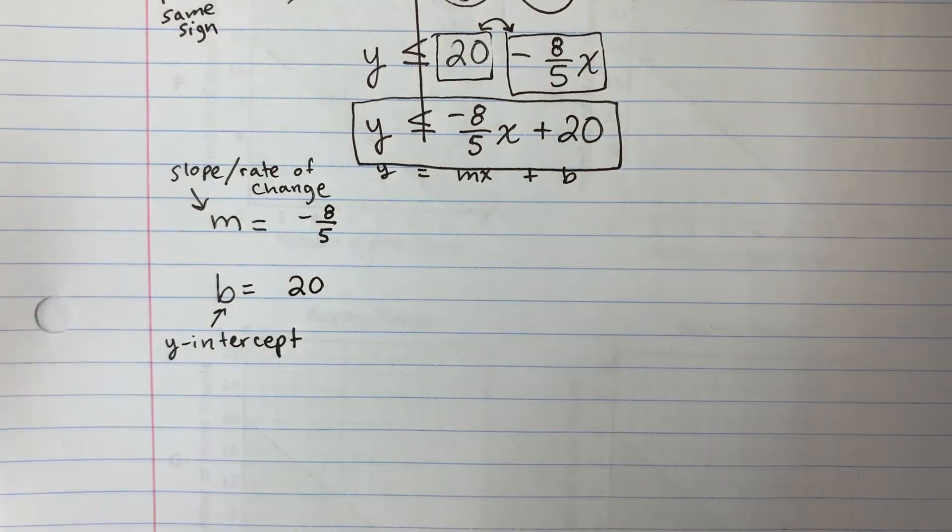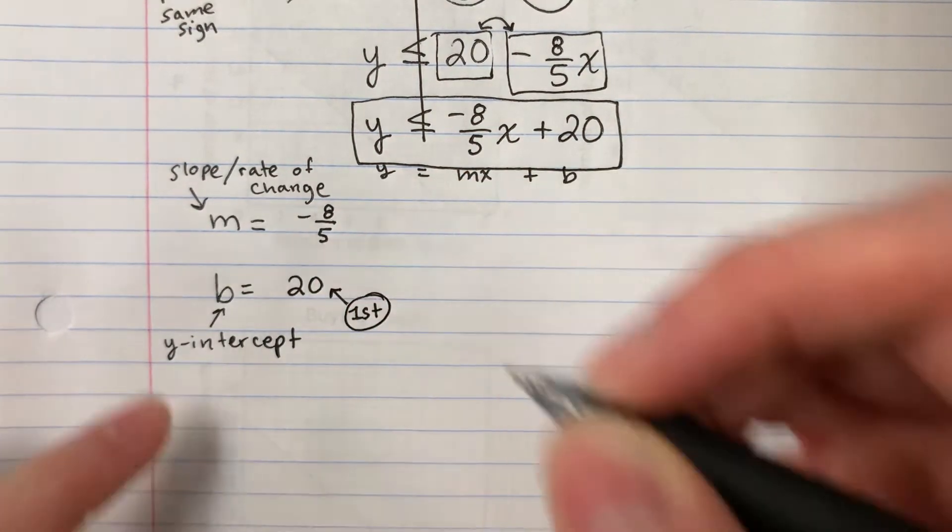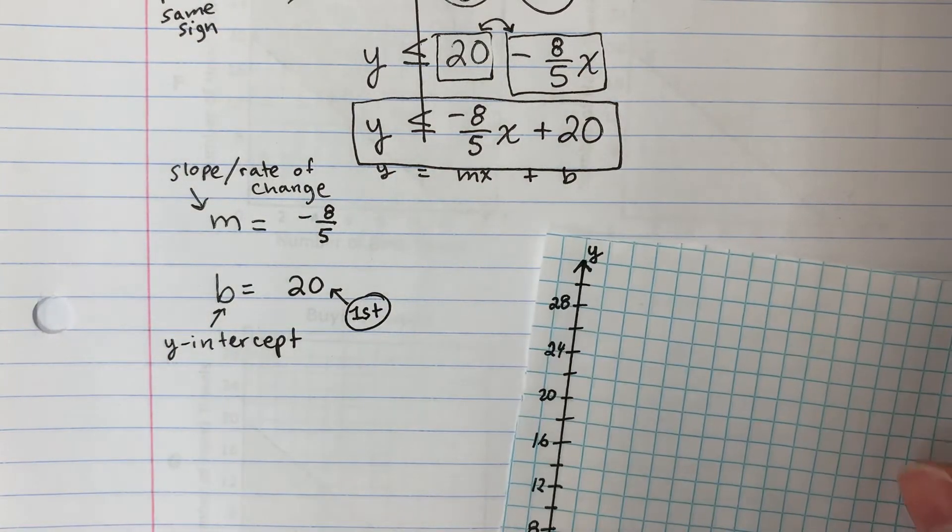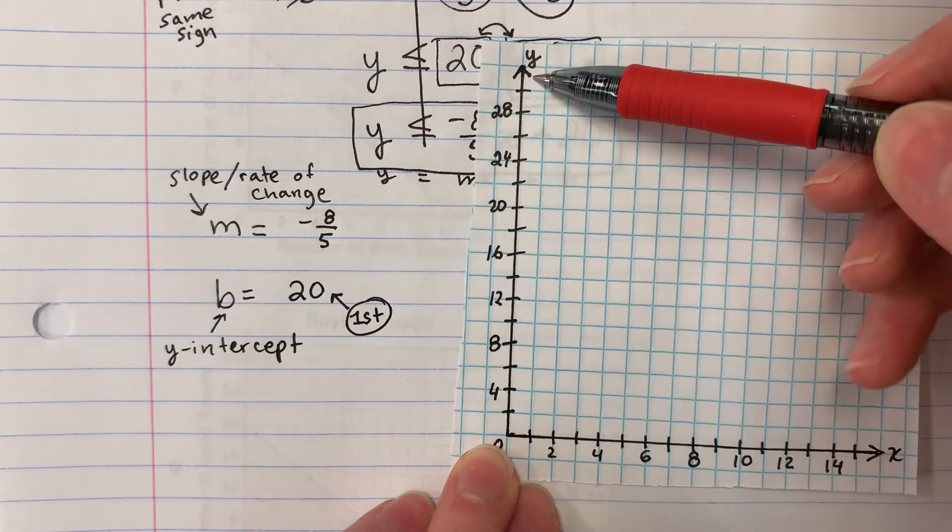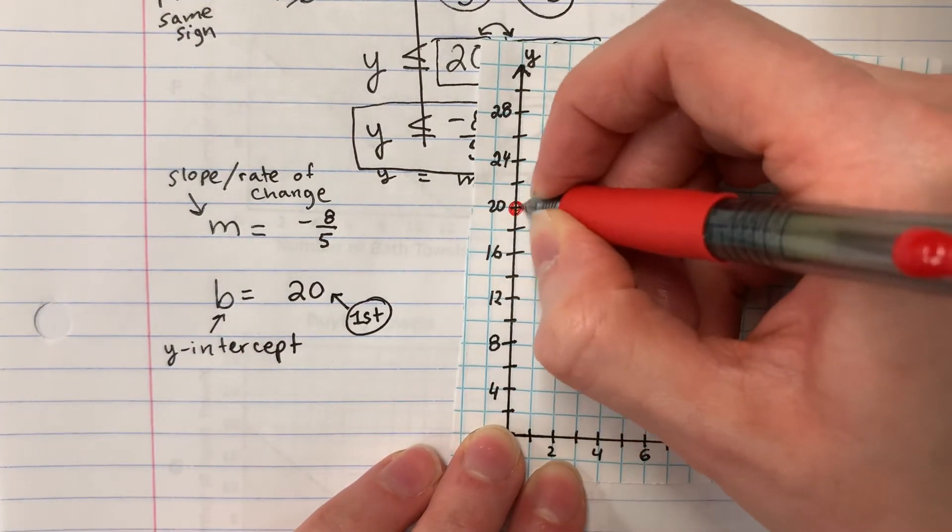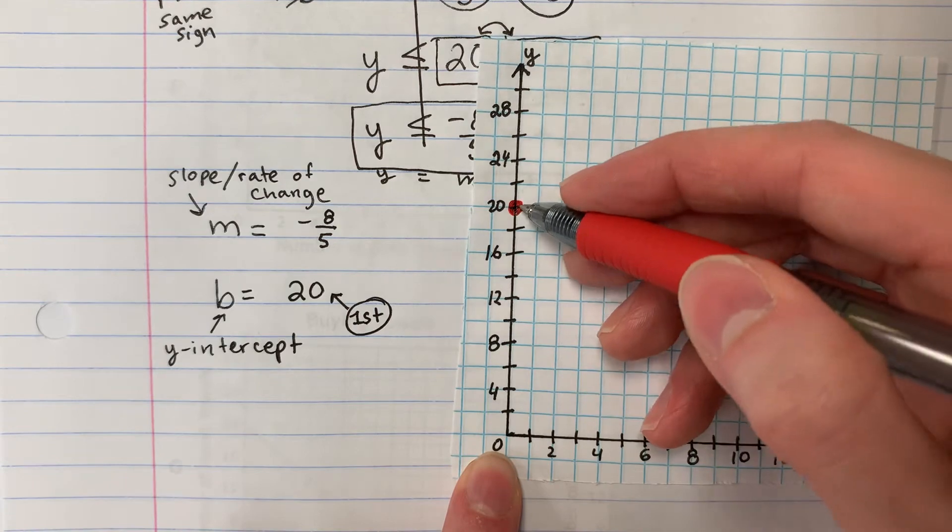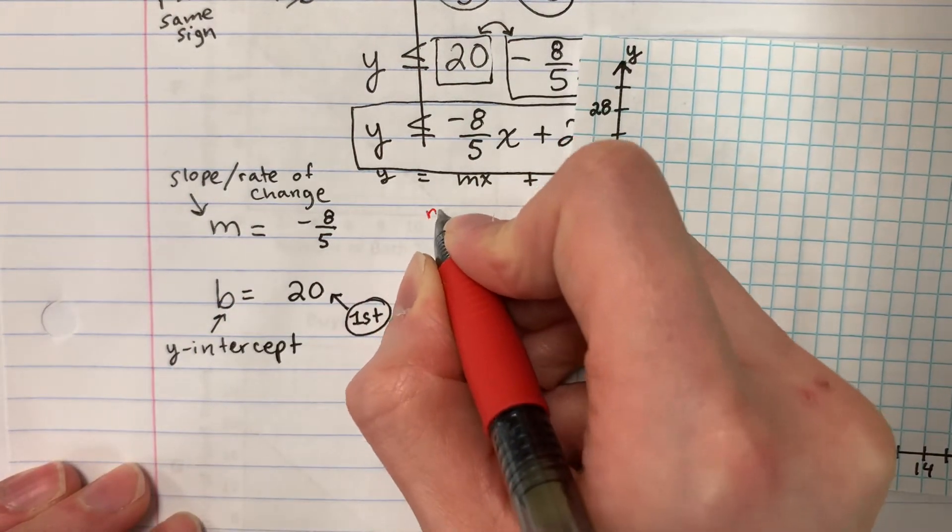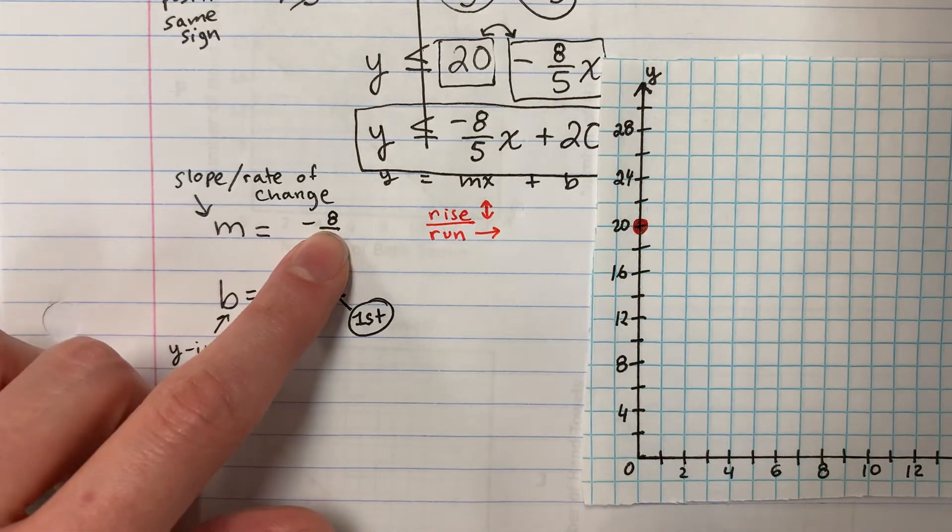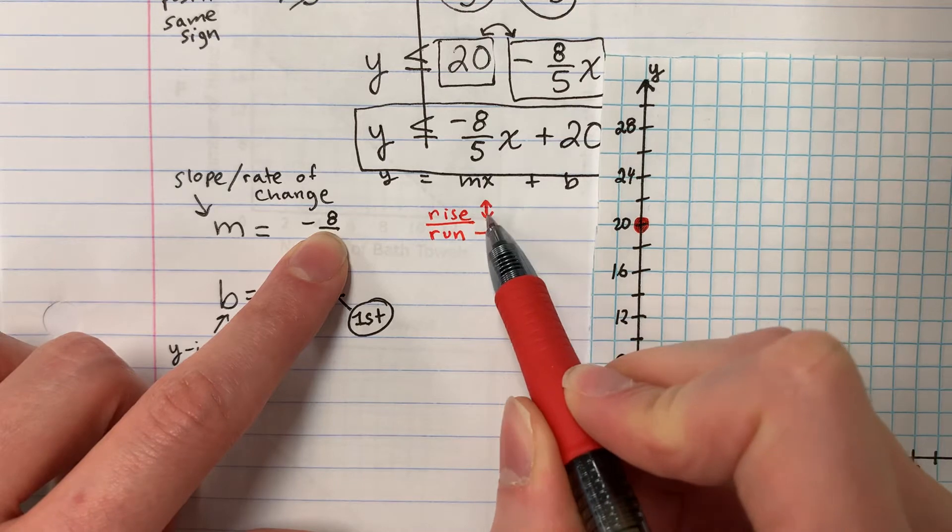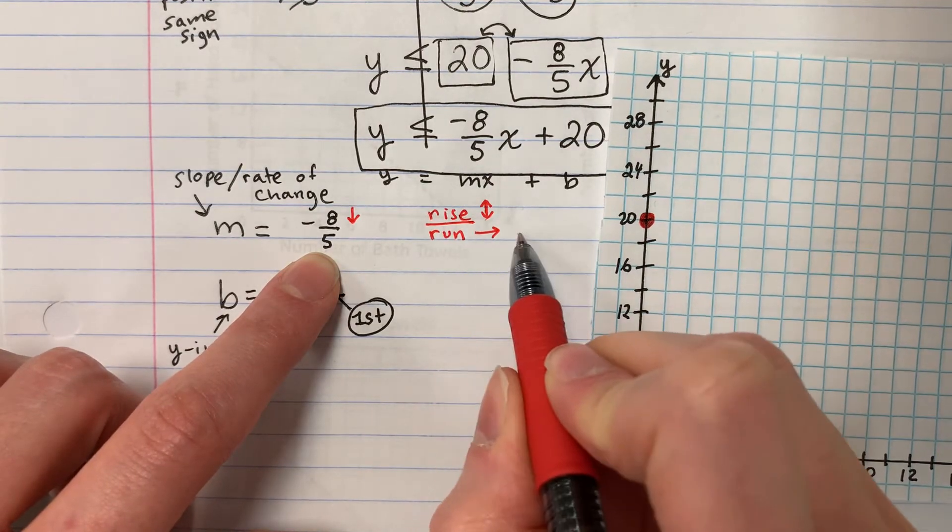So my y intercept is 20. Put a point. This is your B. It's where it touches the y. And then this is rise. Do you remember rise over run? Rise is going to be up down and run is right. So this is negative 8, negative up or down. Negative is down. And 5 is going to be right.